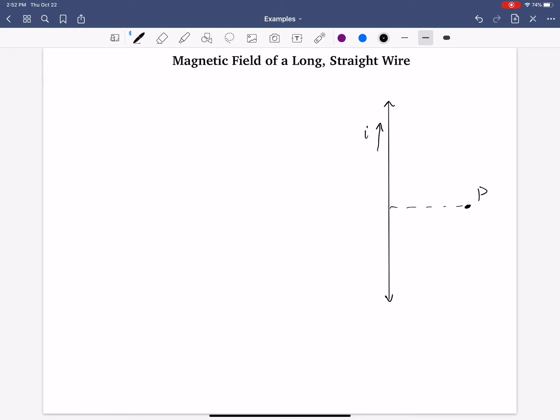We need to use the Biot-Savart law. That tells us that the magnetic field will be equal to mu-naught i over 4 pi times the integral of what's known as ds cross with r hat all over r squared. That looks like a crazy, wicked integral, but let me show you how it's not really that bad. This wire is composed up of tiny length elements ds, and each of these have the same magnitude of current because this is a steady current.